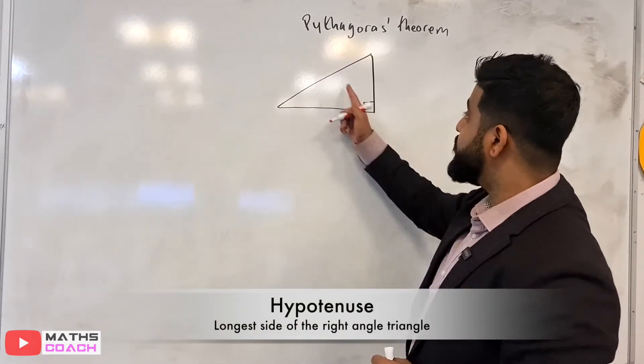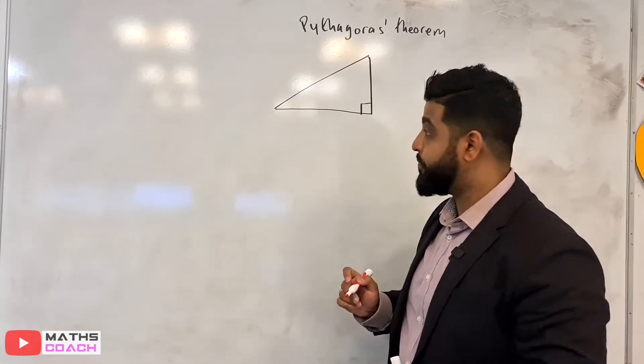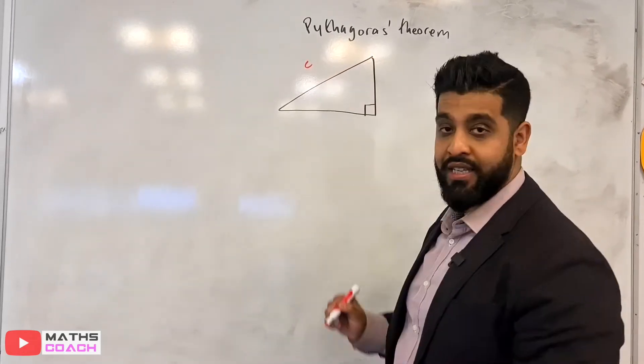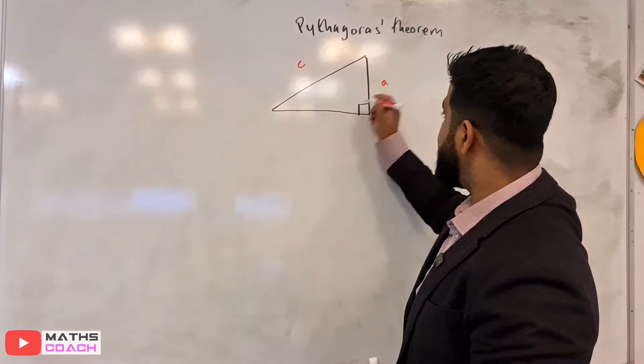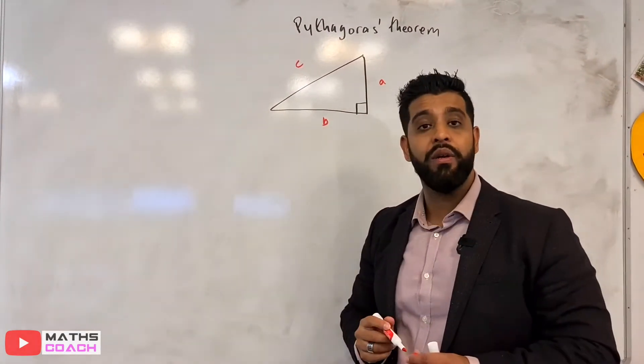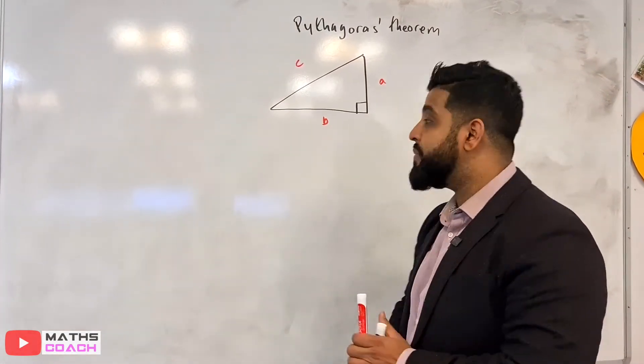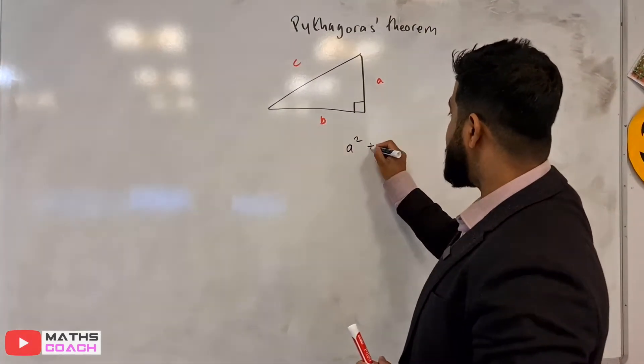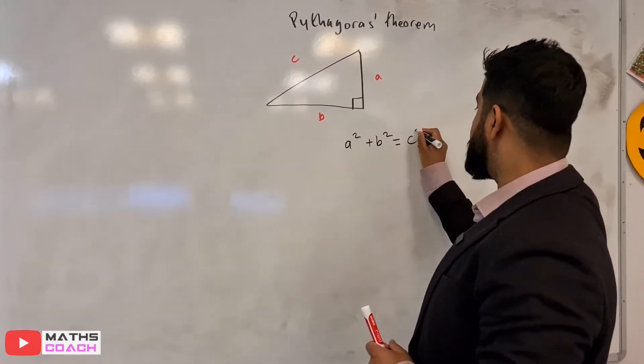Now the hypotenuse is always opposite the right angle here, and we always label that C. The other two, we can call it A and B, and it actually doesn't matter which way around you call it. So the theorem itself says that A squared plus B squared is equal to C squared.